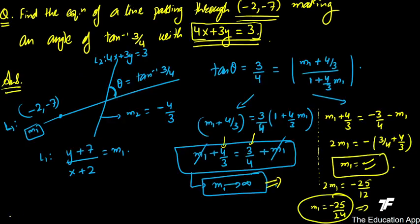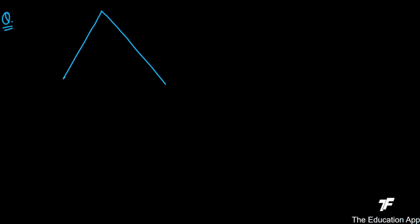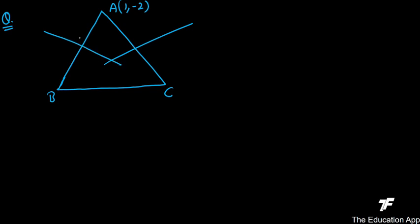Both questions are now clear. Moving to the next question. Consider a triangle ABC where vertex A has coordinates (1, -2). The coordinates of B and C are not given. L1 is the perpendicular bisector of AB, and L2 is the perpendicular bisector of AC.